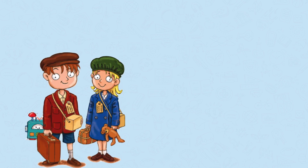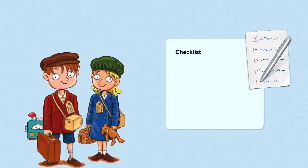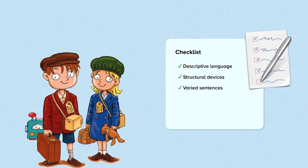We're going to read an example of an autobiography written by a child who was evacuated during the Second World War. As we read, look for examples of each of the following: Do they use descriptive language to make their writing interesting — for instance, language devices such as similes, imagery, and well-chosen vocabulary? Do they use structural devices for effect? Do they vary sentence starters, sentence structures, and sentence lengths? Do they organise their writing using paragraphs? And do they use accurate spelling, punctuation, and grammar?